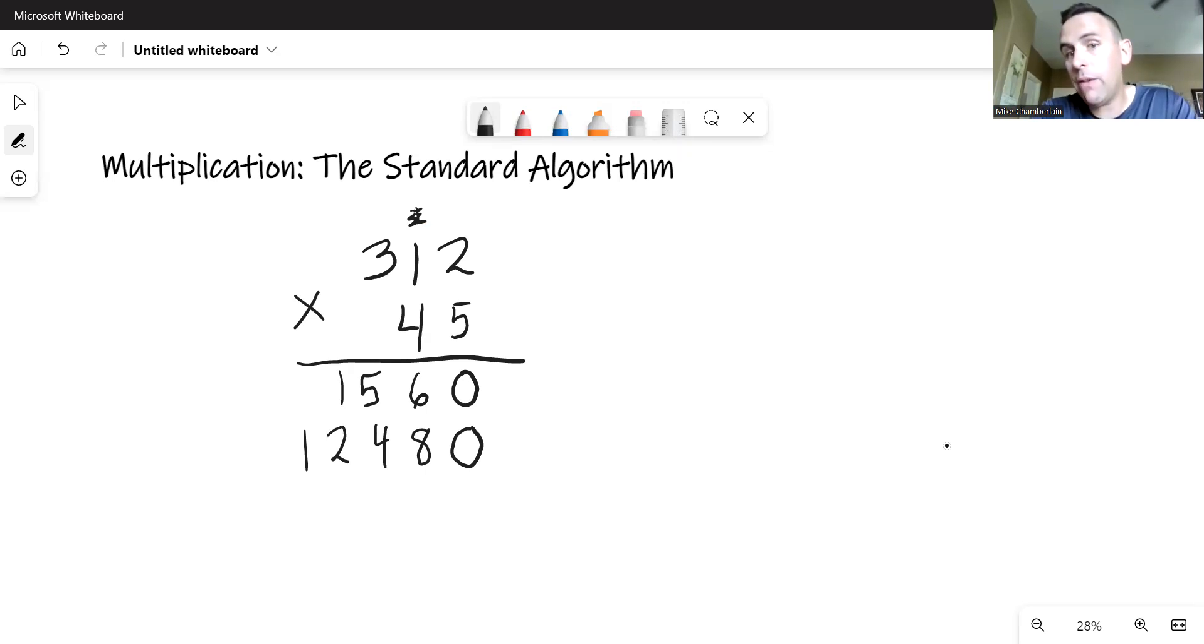Now, the next thing we do is we have to add both of those lines of multiplication together to get our final answer. Zero, 14, carry the one. I have 10, carry the one. For my final answer, 14,040.